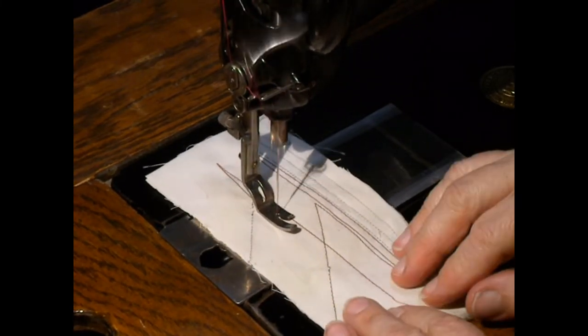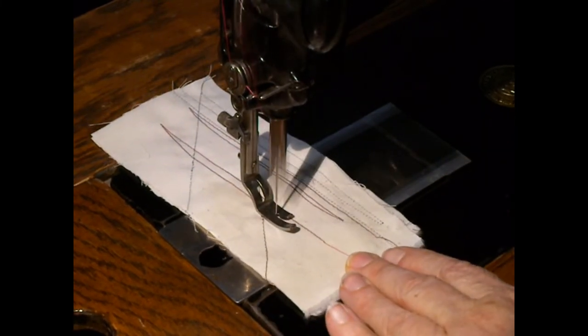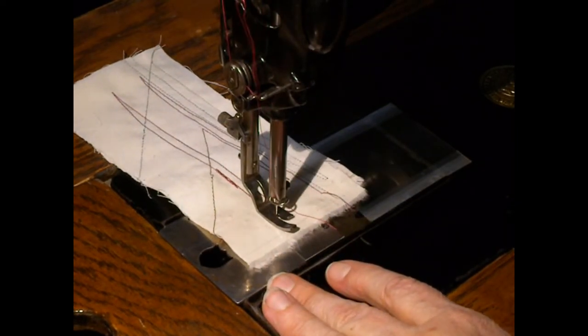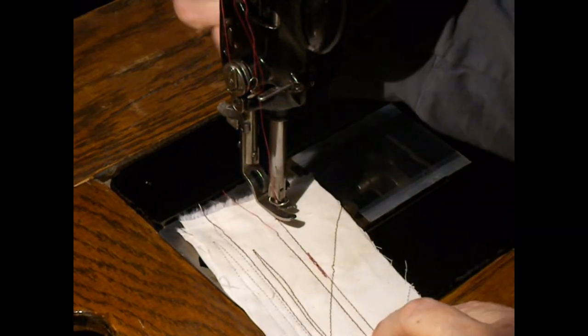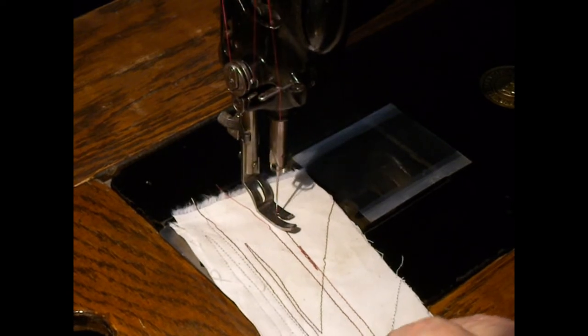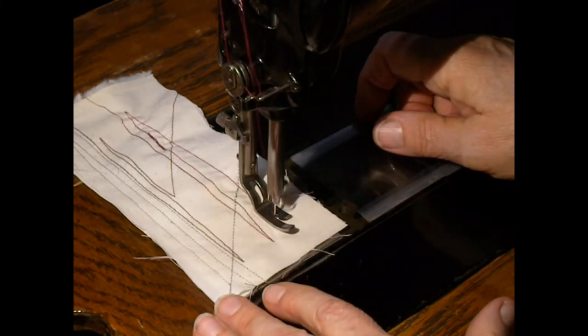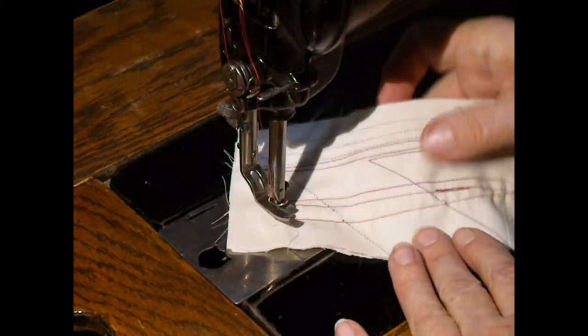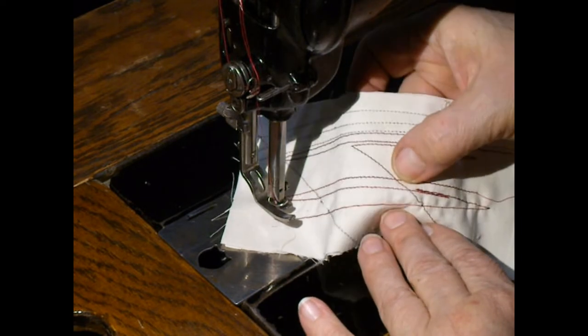It does have reverse—it's part of the stitch regulator. Just put it all the way to the top. It also has a really long stitch that's nice for using for basting. It's probably more than a quarter of an inch long—very big stitch you can do as your maximum stitch, probably about a quarter inch, maybe even a little bigger than that.